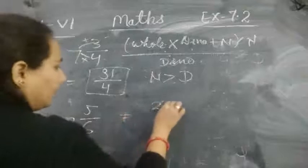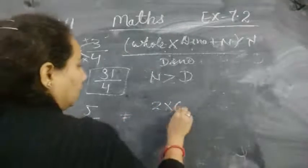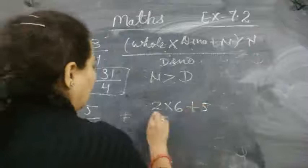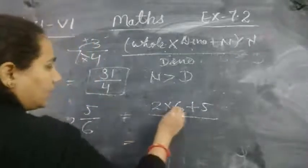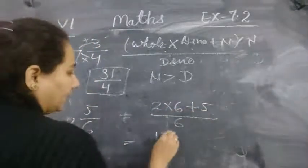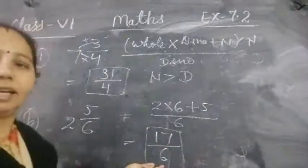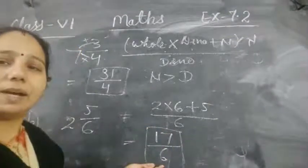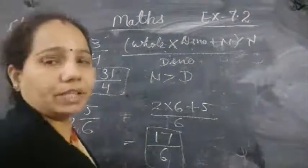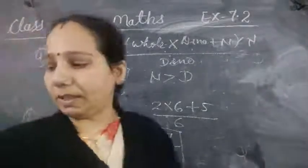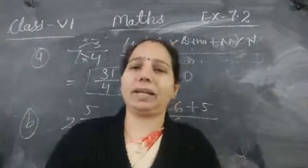Now for part b: 2 multiplied by 6 equals 12, plus 5, equals 17 by 6. So the answer is 17 by 6. This is an improper fraction — we have converted the mixed fraction into an improper fraction.